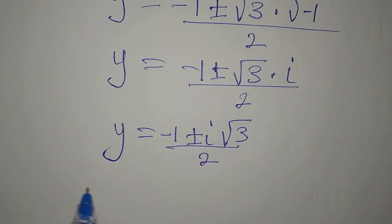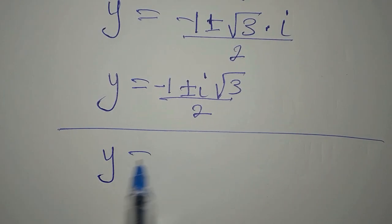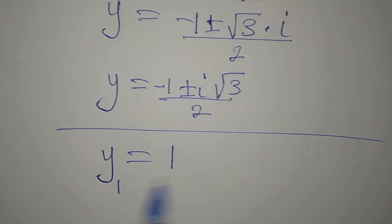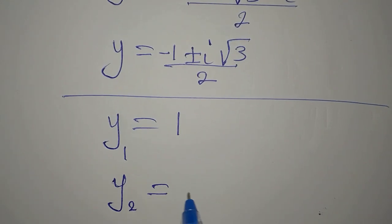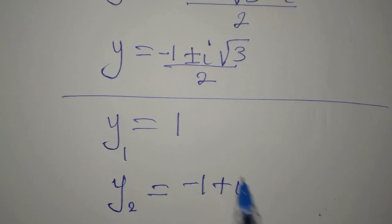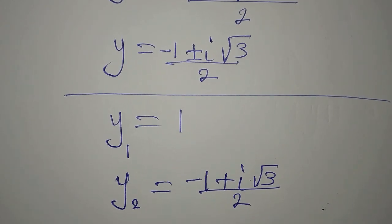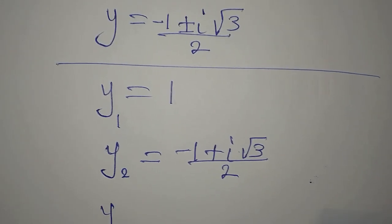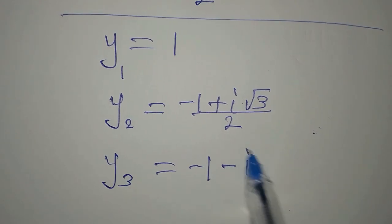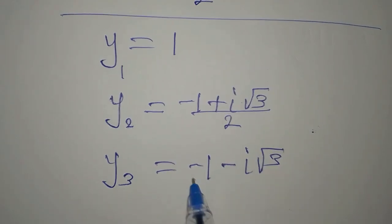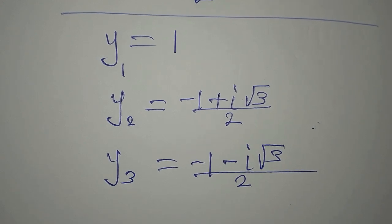We write this in two separate values. Remember we already got y1 equals 1. Then y2 equals minus 1 plus i root 3, divided by 2. And y3 equals minus 1 minus i root 3, divided by 2. These are the three solutions to the equation.